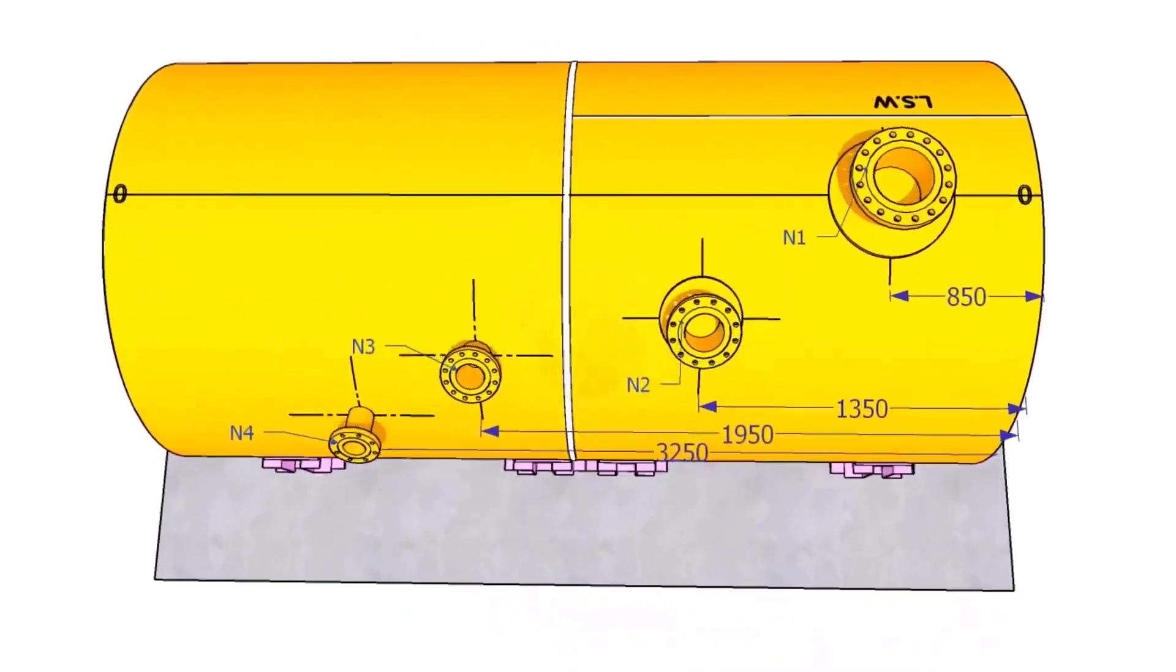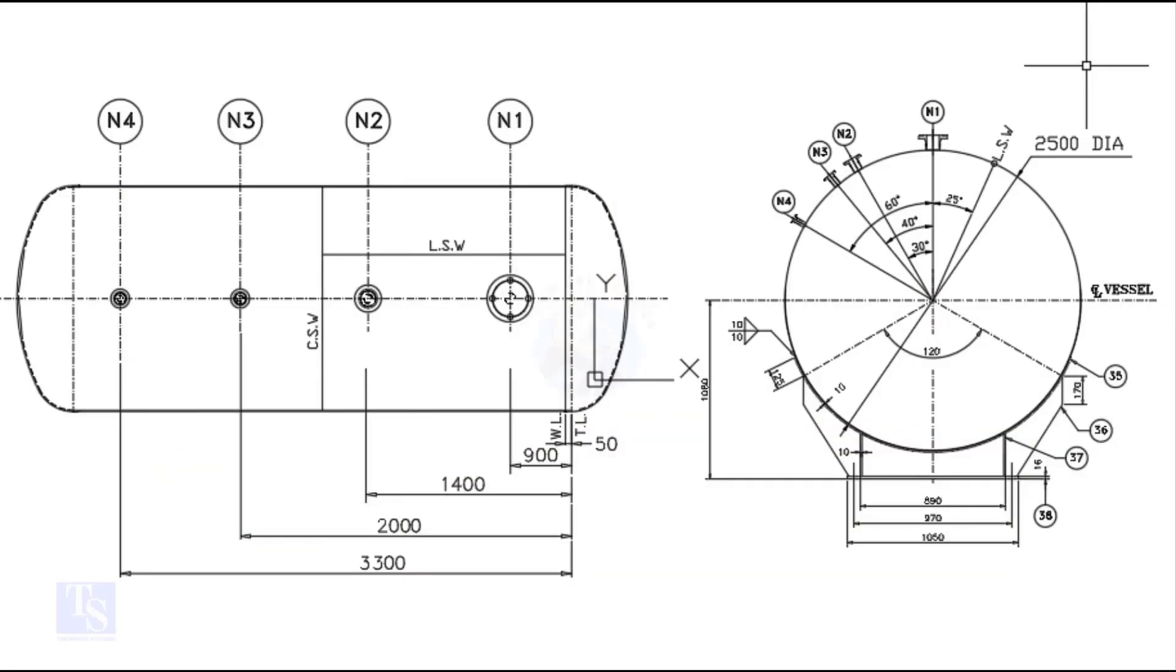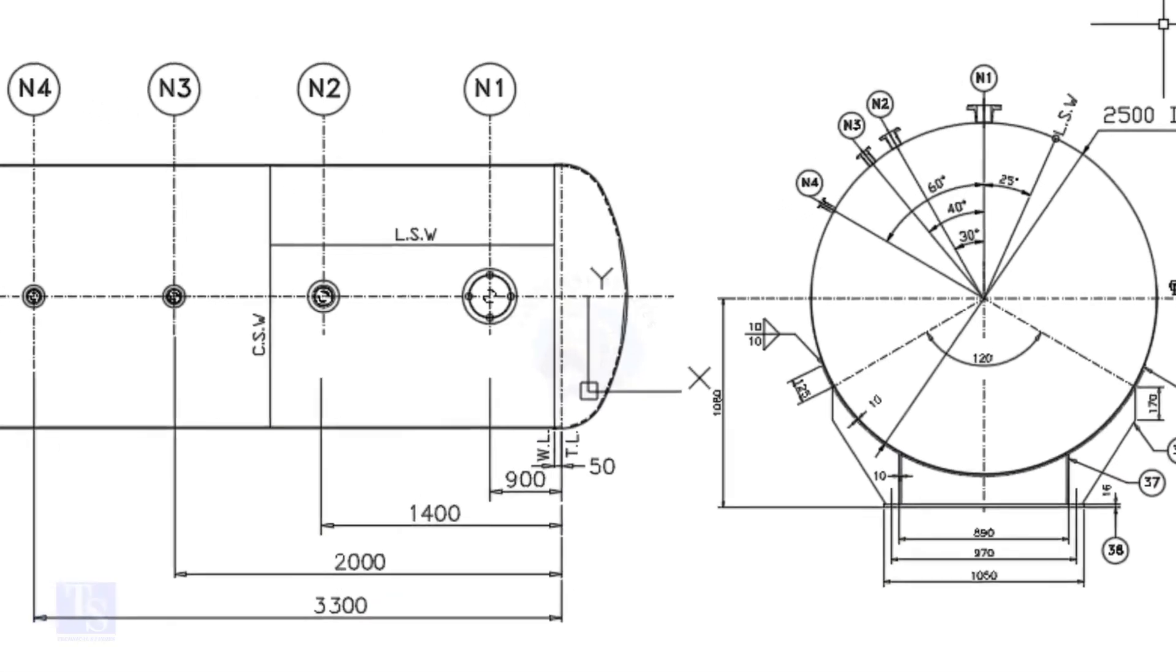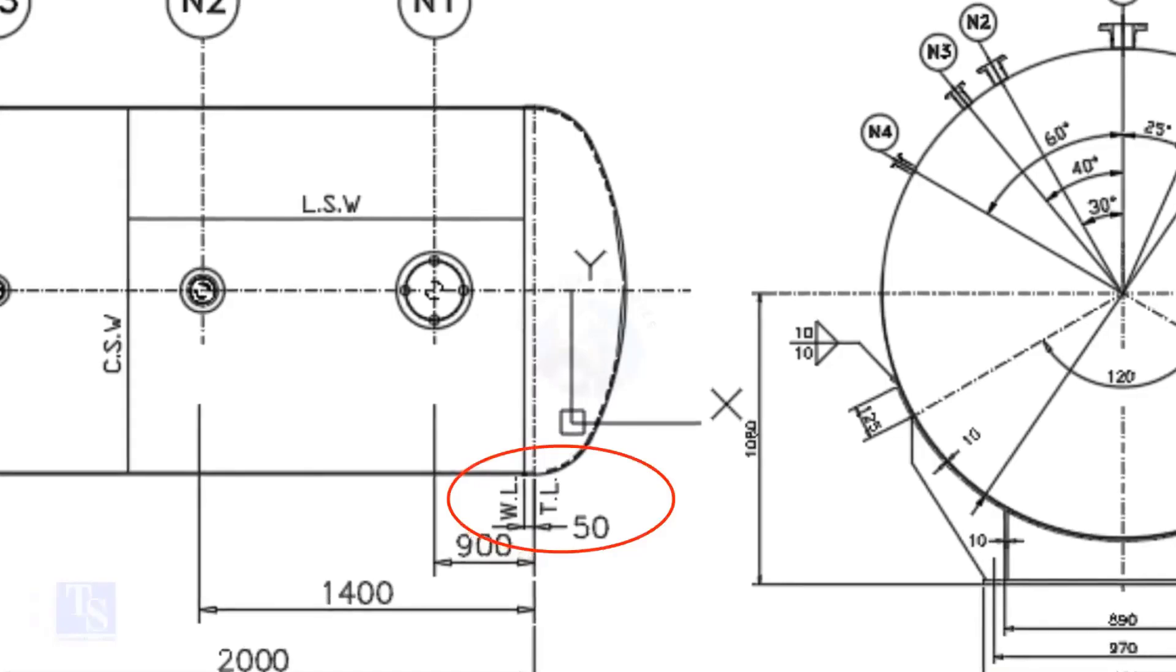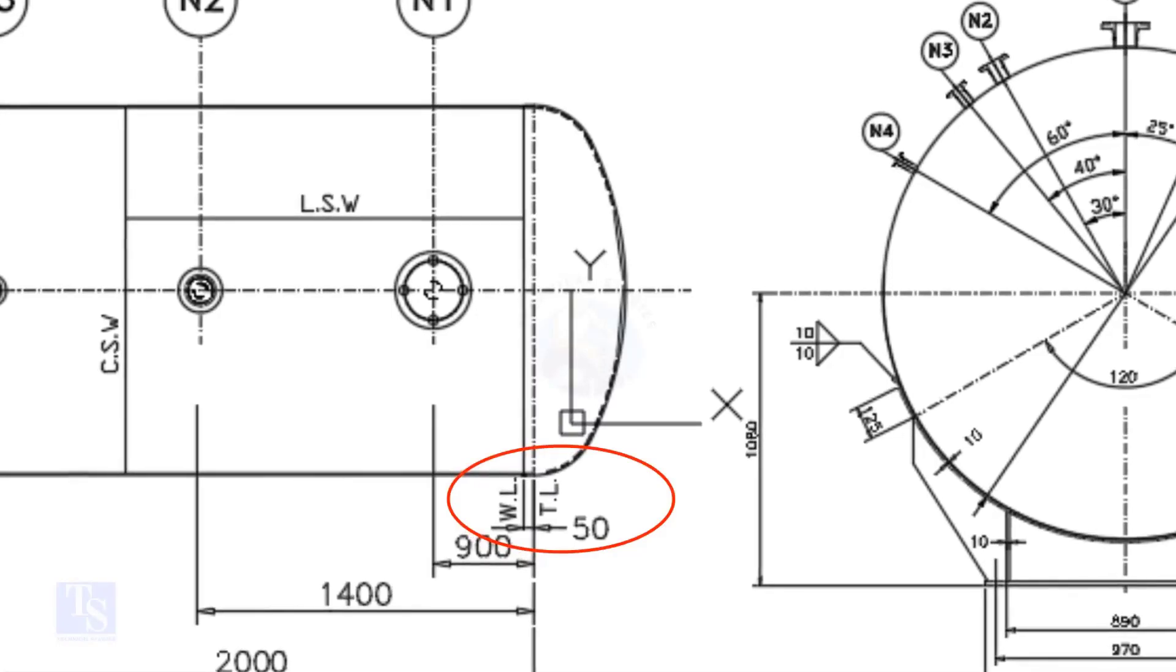Let us first look at the drawing. What is TL and WL? TL stands for tan line and WL stands for weld line. The surface between the TL and WL is called SF, or straight face.